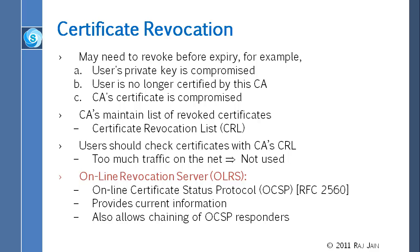So three key things here. First, you understand what is CRL — it's basically a list of all the serial numbers of certificates that are invalid. Second, there are OLRS — they just keep the list at many places so you don't have to go to the CA. The CA is one company, one person. You can go to any of the OLRS. Third, how do the OLRS talk to each other? That is OCSP.